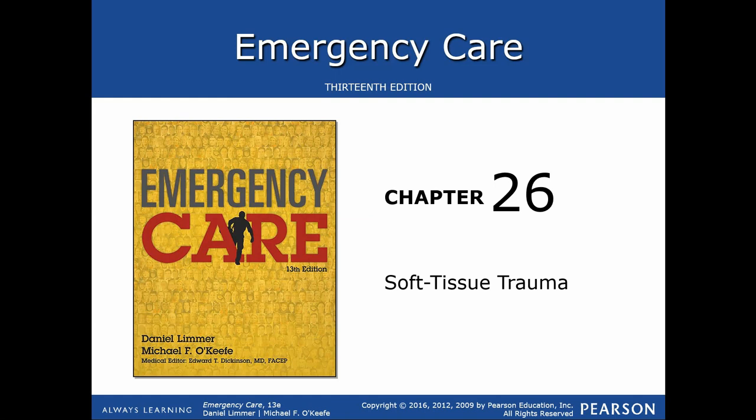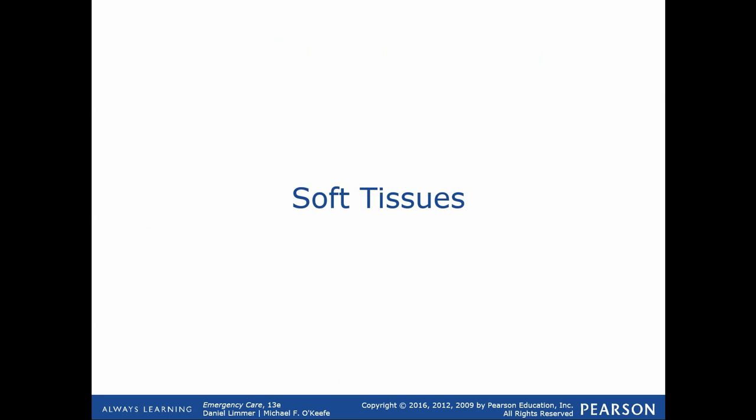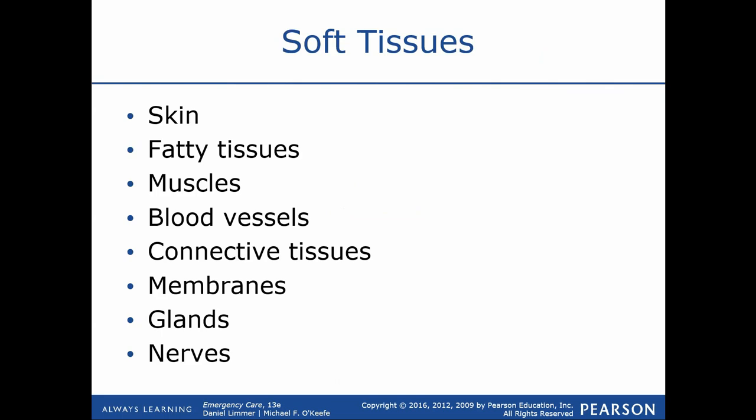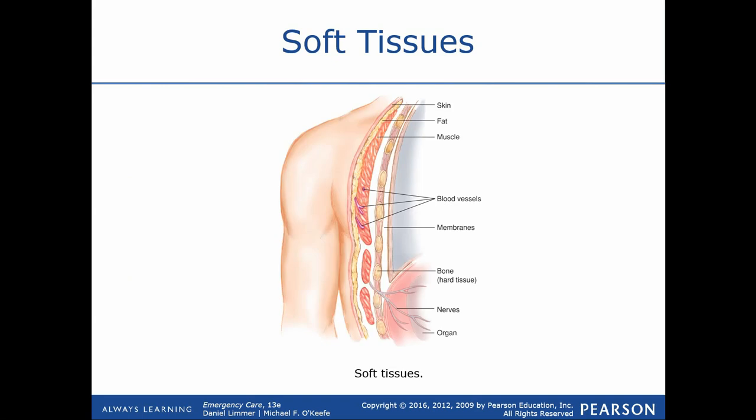Chapter 26 covers soft tissue trauma, introducing the different injuries we can incur with a focus specifically on injuries to the soft tissues themselves. Several types of soft tissues are listed — it can involve any one of these, and generally speaking the treatment is primarily going to be the same: hemorrhage control, bleeding management, pressure, that type of stuff.